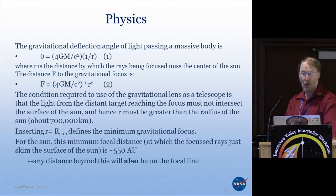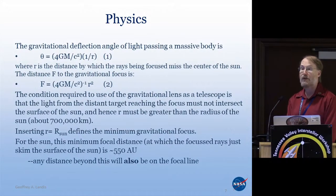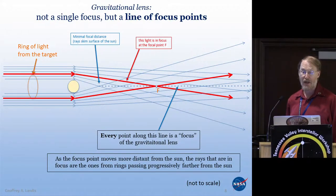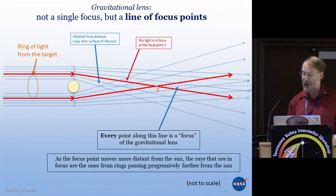Here's the physics. The interesting thing to note is that because you can only image light which does not pass through the sun itself, you need the Einstein ring to be outside the surface of the sun. That puts a minimum distance of about 550 astronomical units for the focus. As you get further and further away, the focus is not a single place — it's not a point focus, but it is a line of focus. This is actually good in some sense. It means you don't have to stop at a point in order to focus.